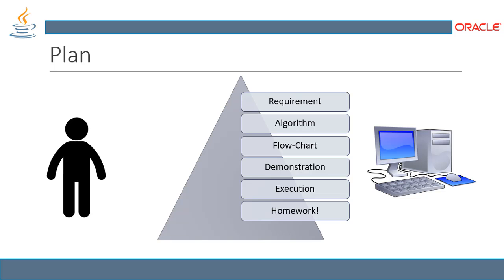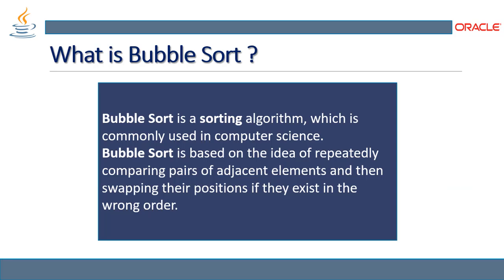Before we get into the algorithm, let's see what bubble sort is. Sorting is a kind of data structure operation where we organize data as per our requirement. Bubble sort is a type of sorting algorithm which helps sort and organize data, commonly used in computer science. It is based on the idea of repeatedly comparing pairs of adjacent elements and swapping their positions if they are in the wrong order, helping to organize a list in ascending or descending order.